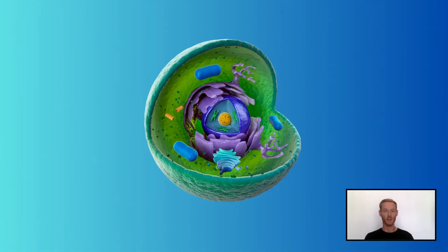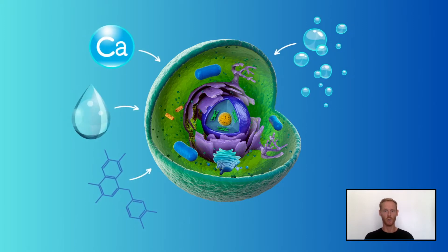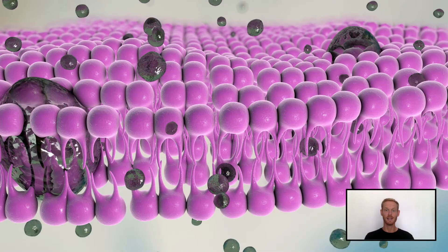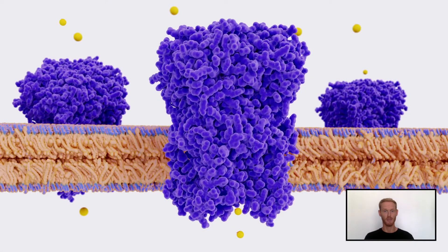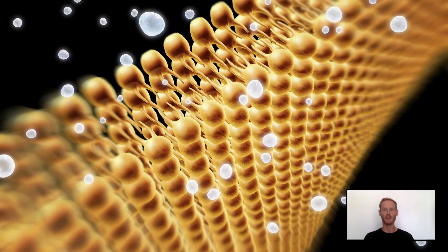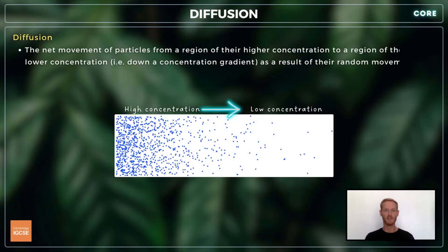Cells are reliant on a variety of substances, including nutrient particles, oxygen, water, and mineral ions. Substances are able to pass through cell membranes, either by some form of active transport, which we'll cover in topic 3.3, or by diffusion. Diffusion is defined as the net movement of particles from a region of higher concentration to a region of lower concentration, as a result of their random movement.